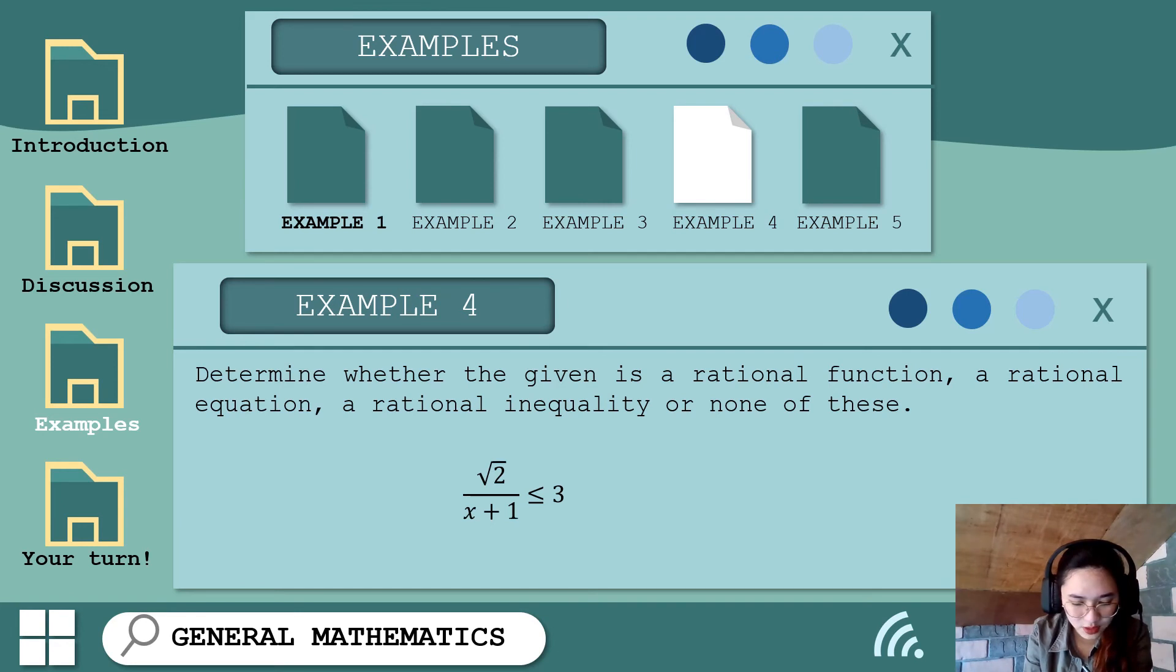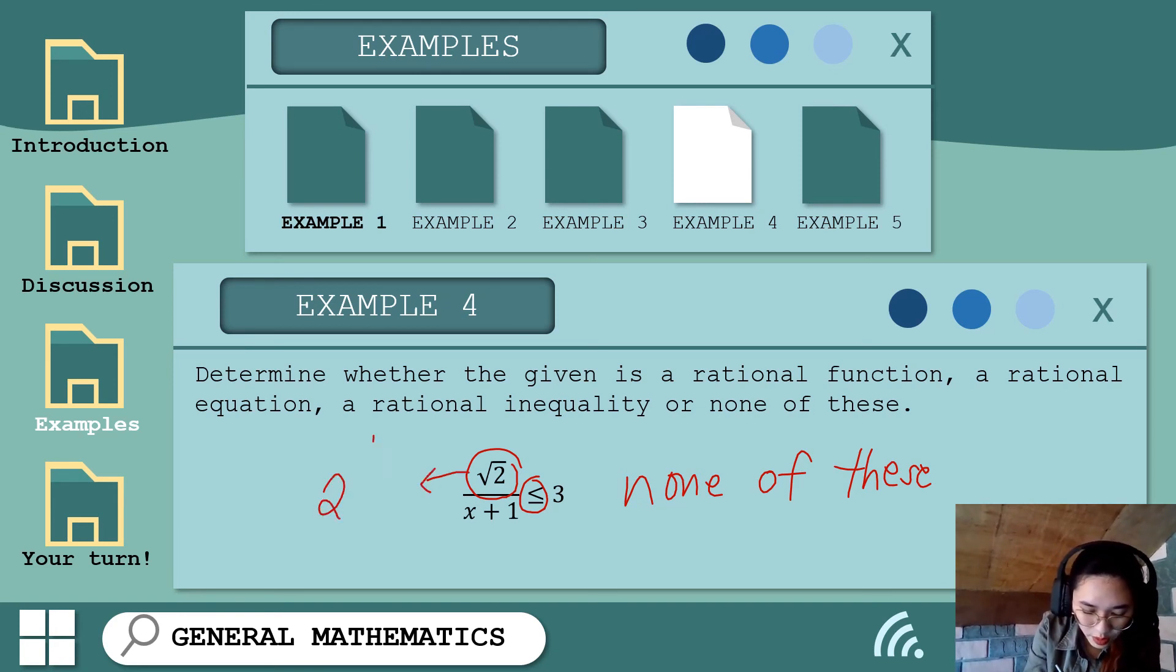Next: we have square root of 2 over x plus 1 less than or equal to 3. And kung makikita nyo, rational inequality po sya. Pero, kasi, itong square root of 2 is a radical expression. Hindi po sya rational expression, so therefore hindi po sya any sa tatlo nyo. So none of these. So tingnan nyo po ha, hindi po, it involves rational expression. Kasi kapag, yan, yung mga square root o yung kanyang mga, pag insulat natin ito in other way, we have 2 raised to 1/2. Yan, hindi po ito, hindi po sya rational expression. This is a radical expression.